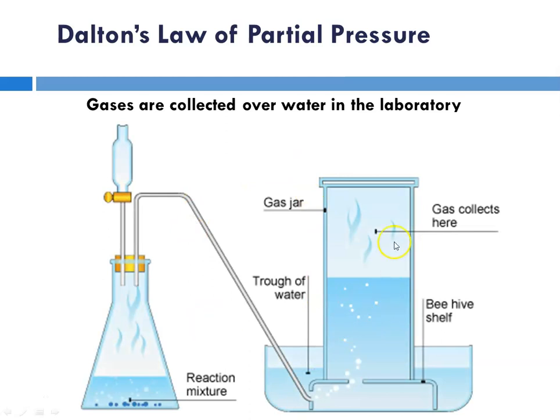When you collect gases over water in a laboratory, let's say I had this Erlenmeyer flask with a reaction going on, and I'm generating, for instance, hydrogen gas. So maybe this is magnesium and acid.